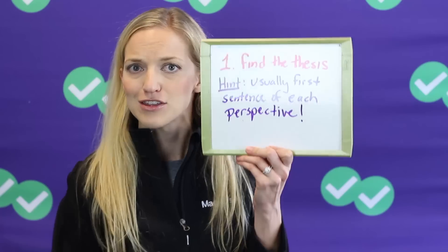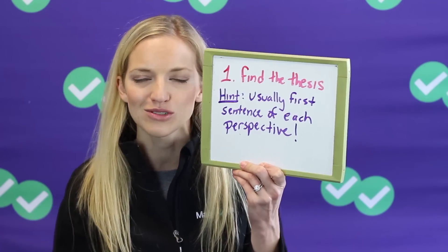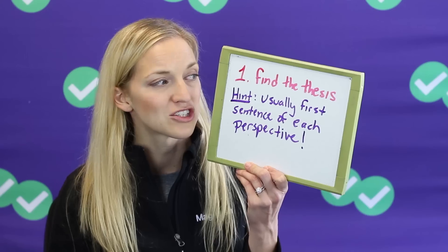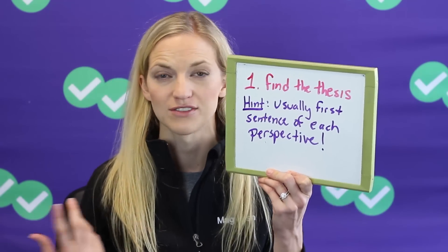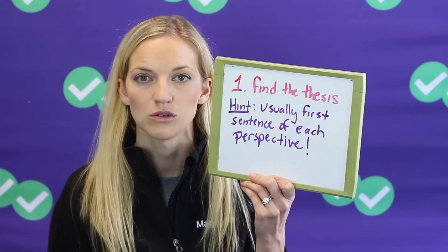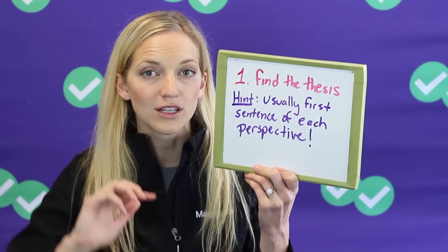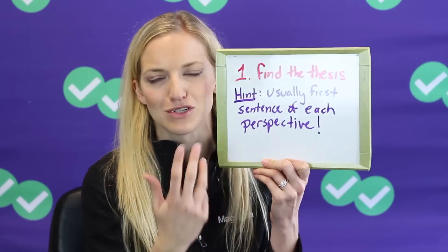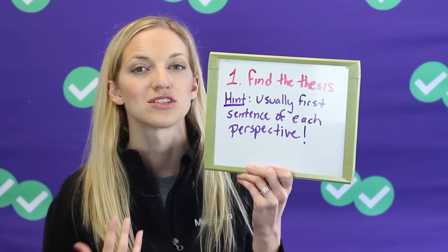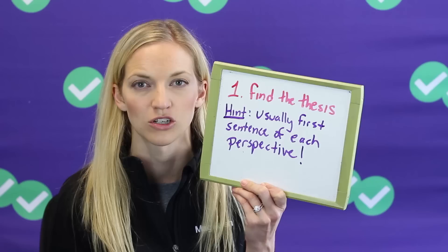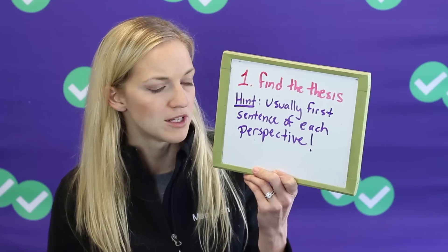First of all, let's talk about what you need to be looking out for as you read. There are two main things. One is to find the thesis — hint, it's usually the first sentence of each perspective. So make sure that when you're reading, even though there's a lot of scientific jargon and your brain kind of tunes out, you very slowly and carefully read that first sentence. Maybe if there's some intro, it'll be the second sentence. Find that thesis and make sure you understand it.